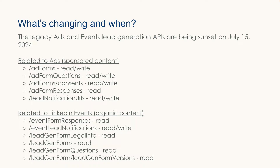So what's changing and when? Our legacy ads and events lead generation APIs are being sunset on July 15th, 2024. If you are a partner or developer using the legacy APIs listed here in either a create or read capacity, or both, then you must migrate to the new LeadSync APIs before July 15th, 2024 to avoid disruption. After this date, API calls to the legacy endpoints listed here will start failing.